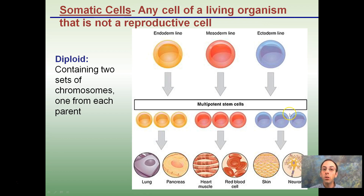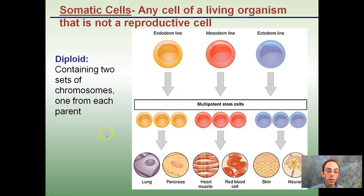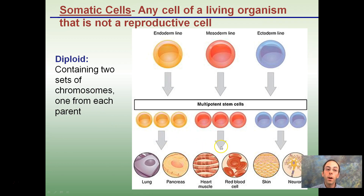Two key terms: somatic cells are any cell in a living organism that is not a reproductive cell — endoderm, mesoderm, ectoderm lines — forming lung tissue, pancreas, heart, red blood cells, skin, or neurons. Somatic cells are diploid, meaning they contain two sets of chromosomes, one from each parent — one from mom, one from dad. In plant cells, this would be one chromosome from the male plant and one from the female.